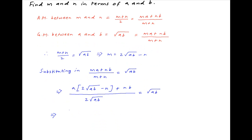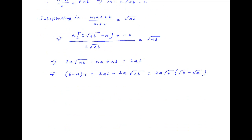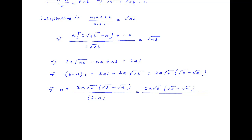Cross-multiplying, we get 2A√(AB) - NA + NB = 2AB. Therefore (B - A)·N = 2AB - 2A√(AB), which can also be written as 2A√B multiplied by (√B - √A). Therefore N is equal to 2A√B(√B - √A) divided by (B - A), which can be written as (√B)² - (√A)².